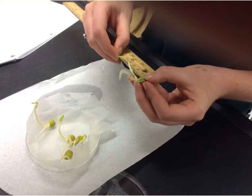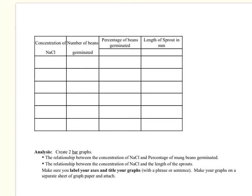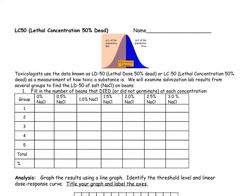You also measured the length of the sprout. You had a couple of pieces of data that you measured. This was the data table and you filled in the number that germinated and the percentage that germinated and the length of the sprout. What we're going to use is sample data, and we're going to use multiple groups' data because the more data you get, the more accurate your results are. Go ahead and pull out this paper LC50 lethal concentration 50% dead.